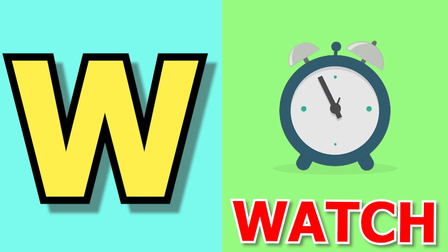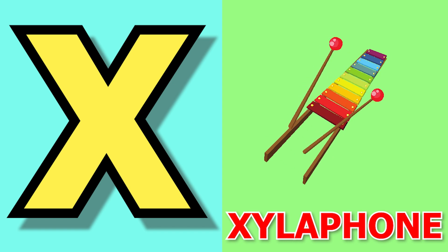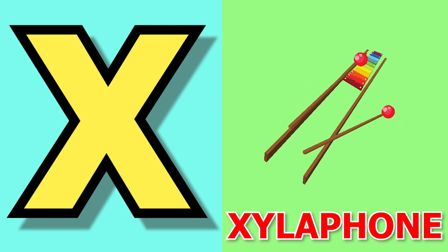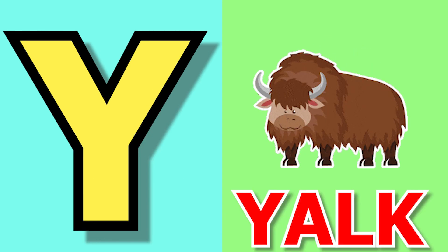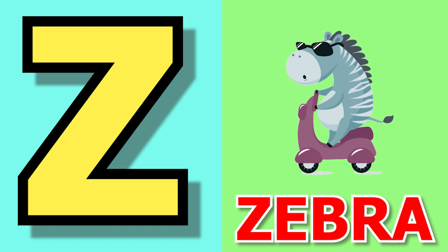W for watch, watch means gadi. X for xylophone, xylophone means xylophone. Y for yak, yak means yak. Z for zebra, zebra means zebra.